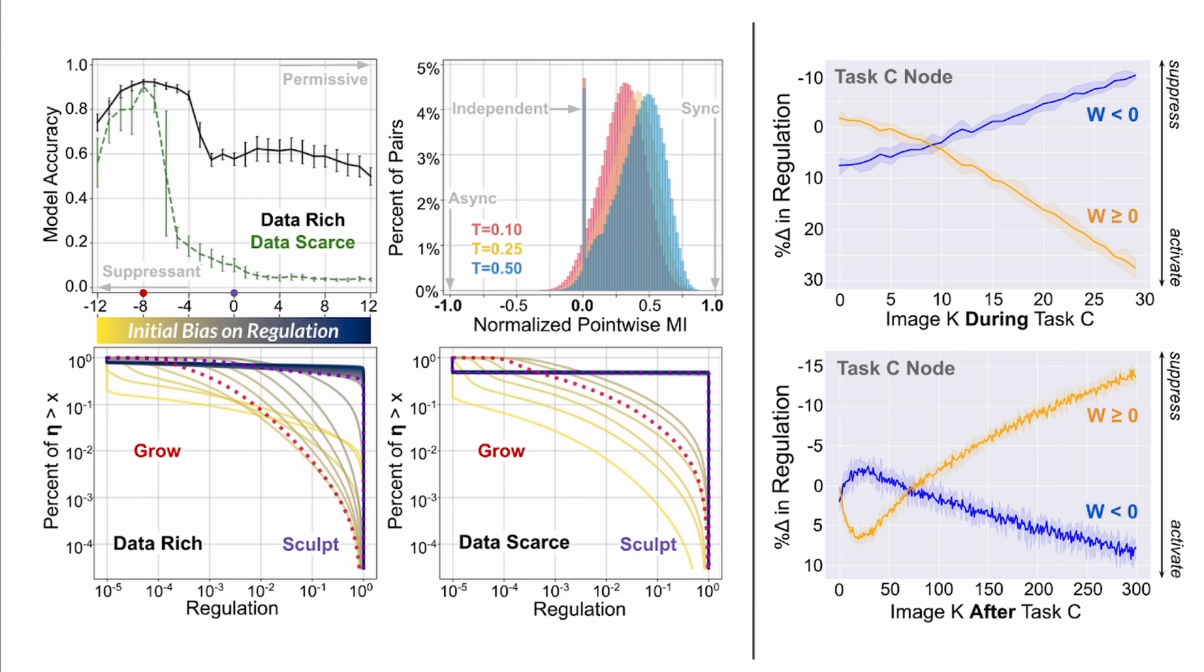Too much change causes forgetting, while too little change results in bad performance. Finally, on the far right, we see that regulation of the class prediction layer is not task-agnostic like the upstream convolutional layers.